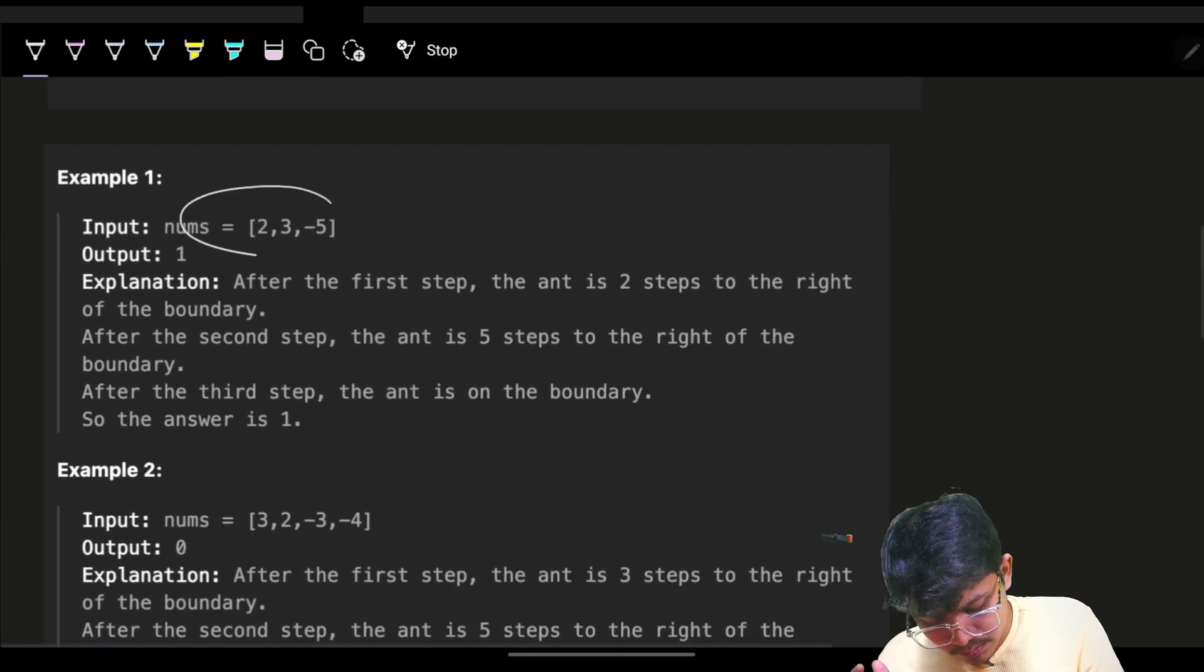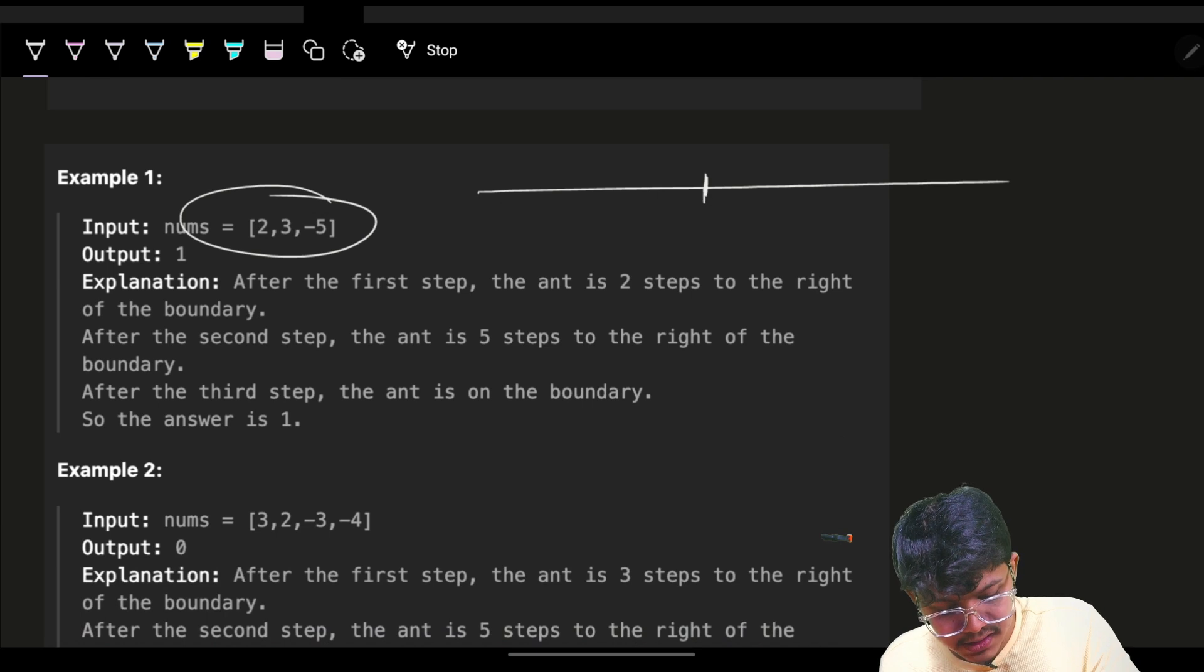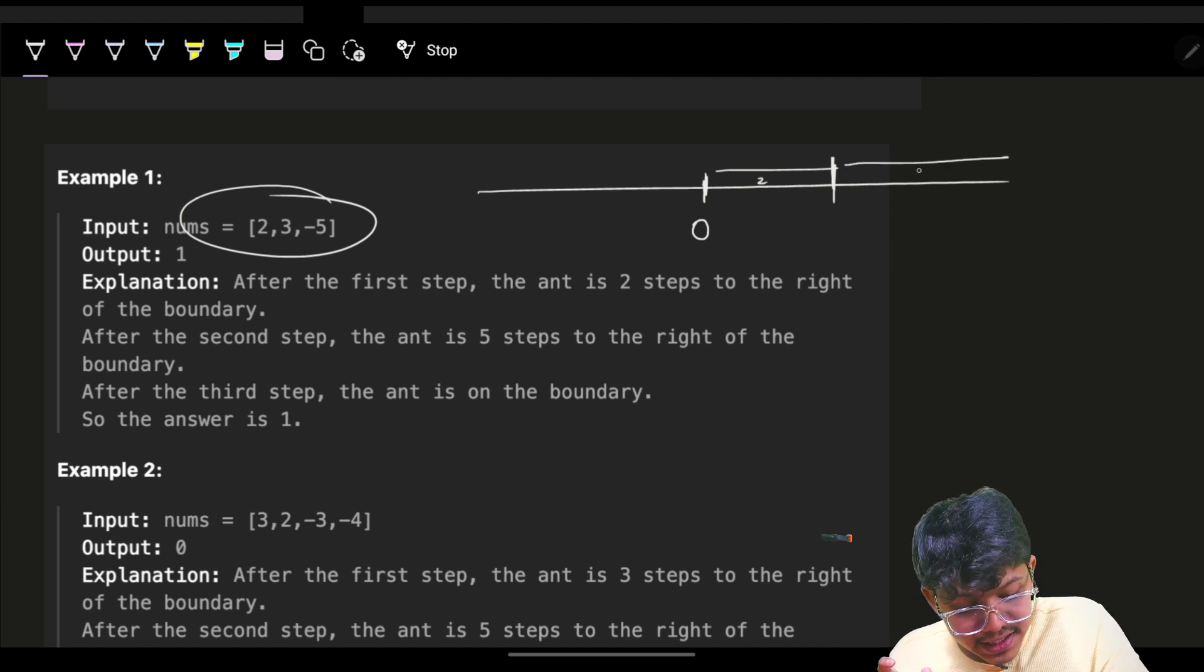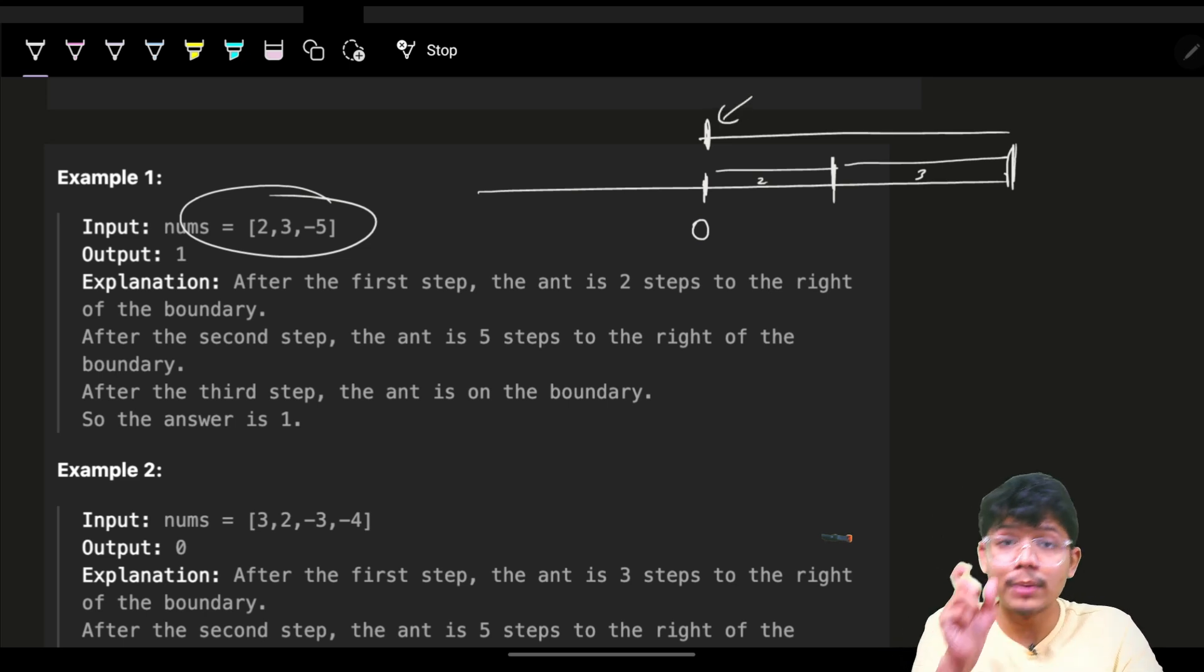For example, in the problem here, the ant will start off from zero. It will go two distance, then three distance, then it will come minus five distance. You see, it has come back to the boundary for the first time and your array is finished. So the ant came back to boundary just one time. If I ask you how will you solve it, you can simply see what is happening.